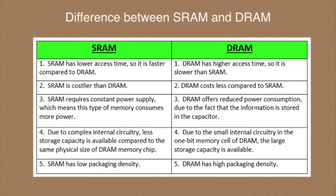SRAM has lower access time, so it is faster compared to DRAM. DRAM has higher access time, so it is slower than SRAM.